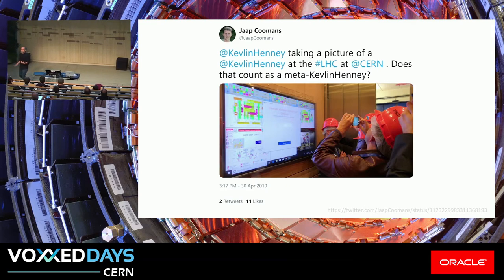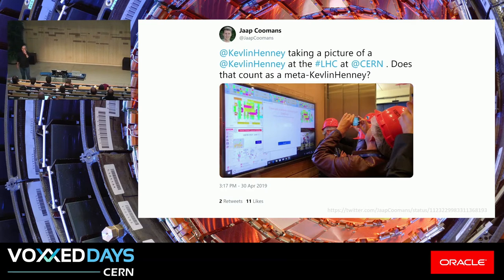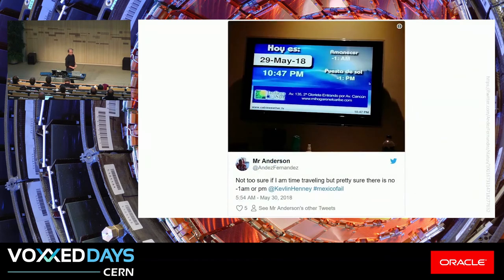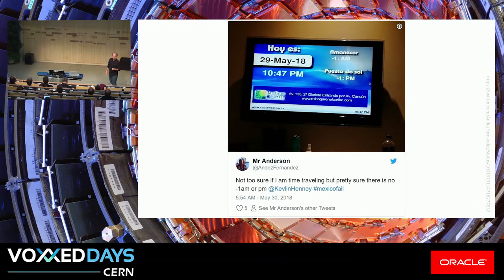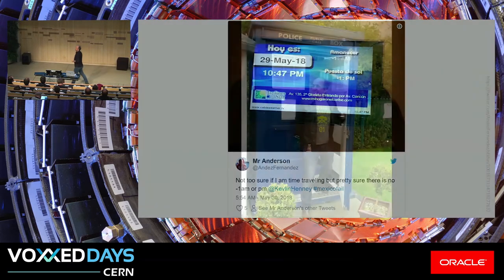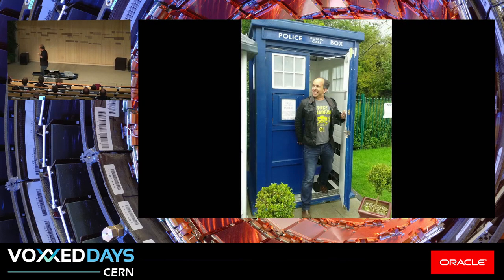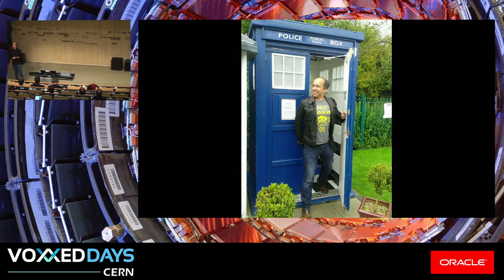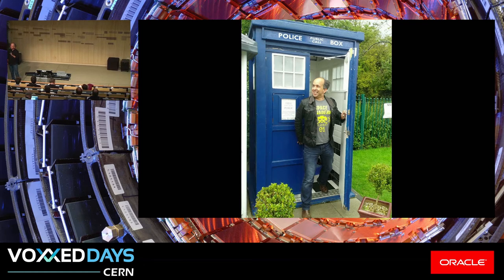So here we are at CERN — what does the outside world think of all this? They're worried about production of black holes, accidental time travel. We have that in software. We do time travel. I'm not sure if I'm time traveling, but I'm pretty sure there is no minus 1 AM or minus 1 PM. It turns out we are deeply confounded by time, and time is one of the areas where we end up with so many accidents. And these are often trivial errors.